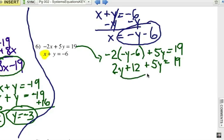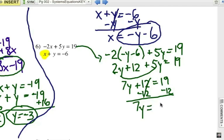Combine my y terms together there. So 7y plus 12 equals 19. I'm going to subtract 12 from each side. The goal is to get the y by itself. So 7y equals positive 7. And y must be equal to 1. So I've got one answer. And I've already done one substitution.